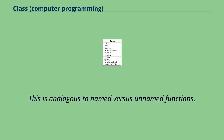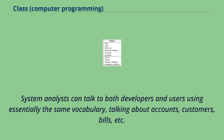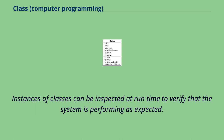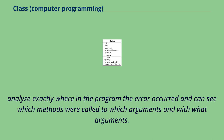The benefits of organizing software into object classes fall into three categories. Object classes facilitate rapid development because they lessen the semantic gap between the code and the users — system analysts can talk to both developers and users using essentially the same vocabulary, talking about accounts, customers, bills, etc. Object classes also facilitate rapid development because most object-oriented environments come with powerful debugging and testing tools. Instances of classes can be inspected at runtime to verify that the system is performing as expected, and most object-oriented environments have interpreted debugging capabilities so the developer can analyze exactly where in the program an error occurred.